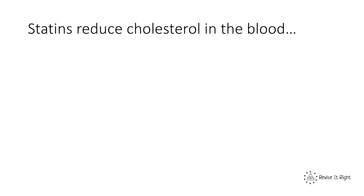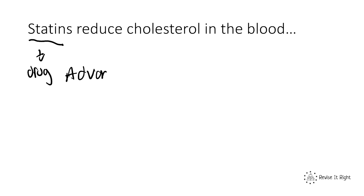A second treatment for coronary heart disease is something called a statin. A statin is essentially a drug — a tablet that reduces the cholesterol in the blood. This is more of a preventative measure. If you have a high level of cholesterol in your blood then you're at risk of your coronary artery becoming clogged and blocked. Just like with our stent, there are advantages and disadvantages to be aware of for this treatment.